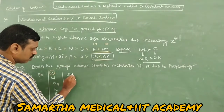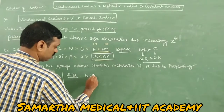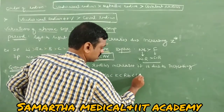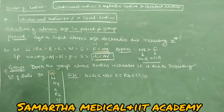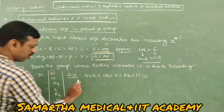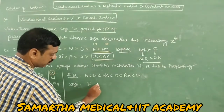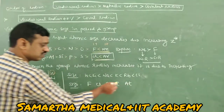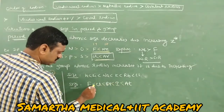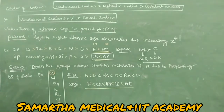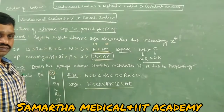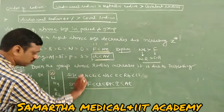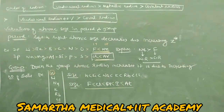So the order is hydrogen < lithium < sodium < potassium < rubidium < cesium. In the halogen group: fluorine, chlorine, bromine, iodine, astatine — size also increases with no exceptions. In the 13th group, there is a variation; there is no constant increasing trend.